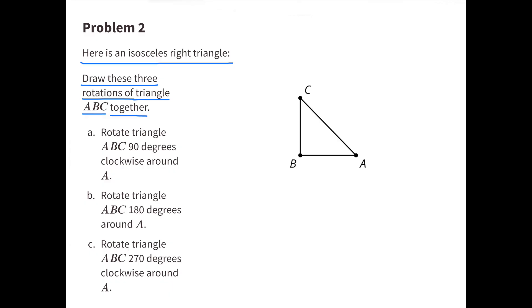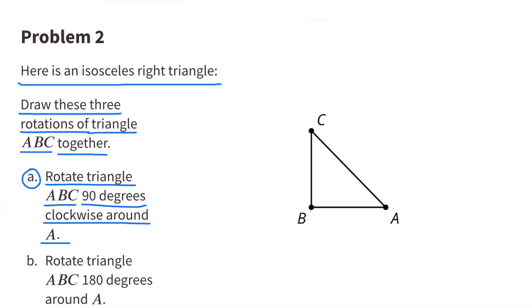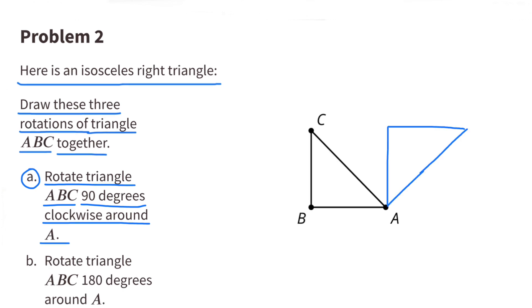Number 2. Here's an isosceles right triangle. Draw these three rotations of triangle ABC together. Part A: Rotate triangle ABC 90 degrees clockwise around A. Here's a look at the 90 degree clockwise rotation using A as the center.